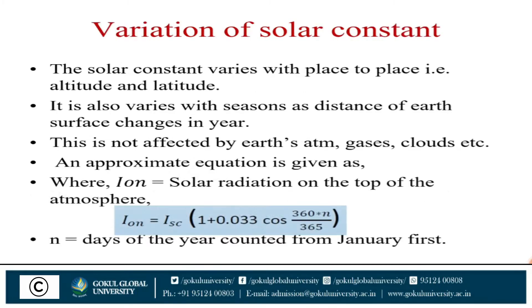Next: variation of solar constant. The solar constant varies from place to place — for example, with altitude and latitude. It also varies with season as the distance between the Earth's surface and the Sun changes throughout the year. This is not affected by Earth's atmosphere, gases, clouds, etc. An approximate equation is given: I_on (solar radiation on the top of the atmosphere) equals I_sc multiplied by [1 + 0.033 × cos(360n/365)], where n is the day of the year counted from January 1st to December 31st.